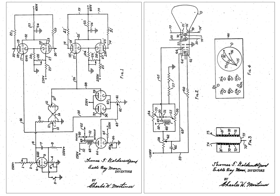Following the 1947 invention of the cathode ray tube amusement device — the earliest known interactive electronic game as well as the first to use an electronic display — the first true video games were created in the early 1950s. Initially created as technology demonstrations, such as the Bertie the Brain and Nimrod computers in 1950 and 1951, video games also became the purview of academic research. A series of games, generally simulating real-world board games, were created at various research institutions to explore programming, human-computer interaction, and computer algorithms.